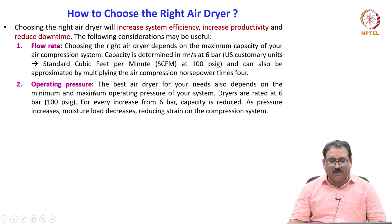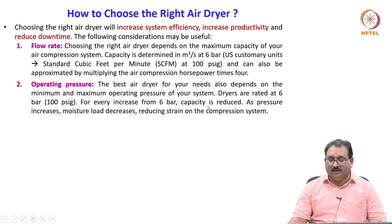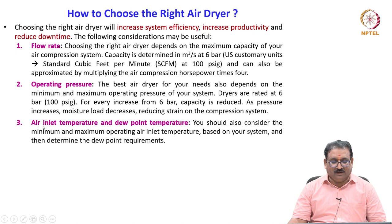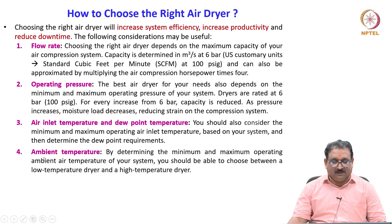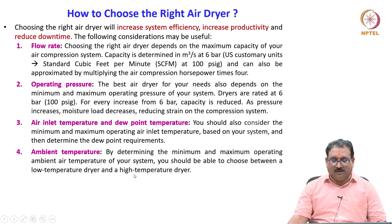Operating pressure is another consideration — the best air dryer also depends on the minimum and maximum operating pressure of your system. Dryers are rated at 6 bar. For every increase from 6 bar, capacity is reduced, but as pressure increases, moisture load decreases, reducing the strain on the compression system. The third parameter is air inlet temperature and dew point temperature. You should consider the minimum and maximum operating ambient air temperature and determine dew point requirements, choosing between a low temperature or high temperature dryer accordingly.